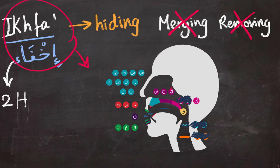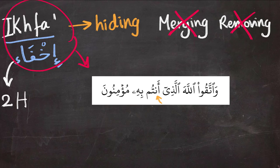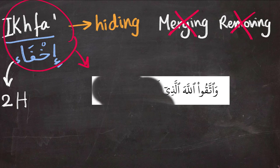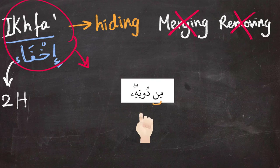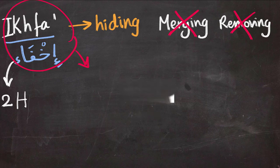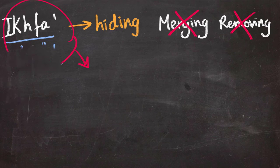Any sound that doesn't belong to the throat sounds or the yarmaloon merging sounds is an ikhfa sound — these are 15 sounds. Examples: 'antum' — my mouth takes the shape of the ta while I let air through my nasal cavity. 'Inni khaliqun basharan min tin.' Also 'min dunihi,' and 'ila thamuda akhahum salihan.' Don't forget to extend this process for two harakat.